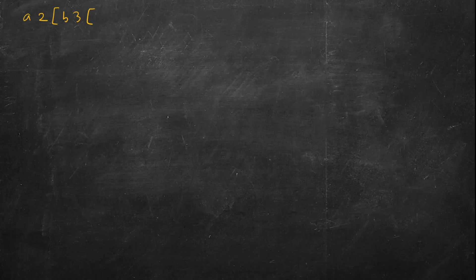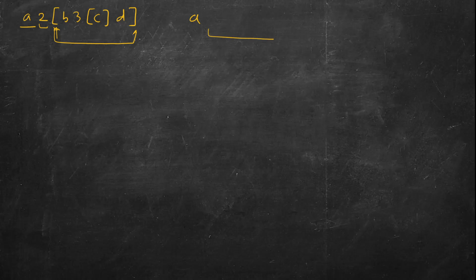Let's take a more realistic example: 'a 2[b 3[cd]]'. We have 'a', then number 2, then an opening bracket — so repeat whatever is in the corresponding closing bracket twice. That inner part itself is encoded: 'b' followed by '3[cd]', which decodes to 'bccc'. So the full decode gives us 'abcccdbcccd'.